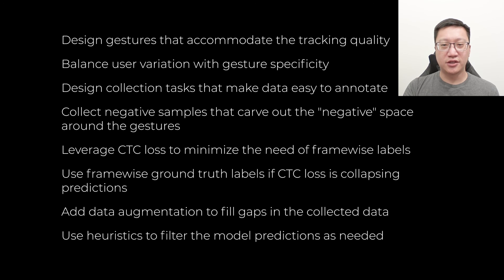Leverage CTC loss to minimize the need of framewise labels. Use framewise ground truth labels if CTC loss is collapsing predictions. Add data augmentation to fill gaps in the collected data. Use heuristics to filter the model predictions as needed.